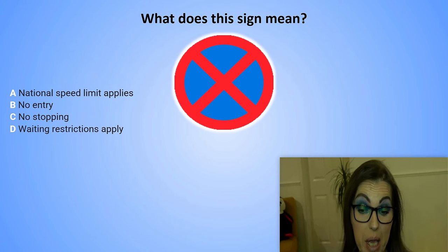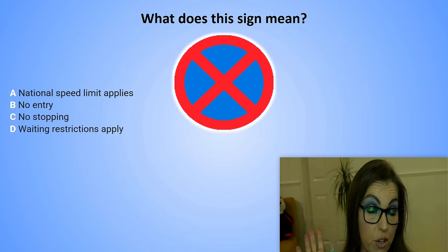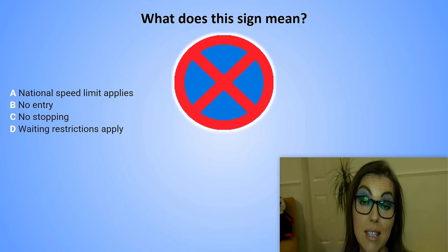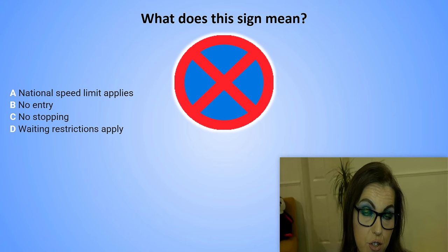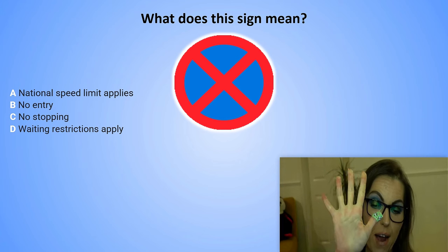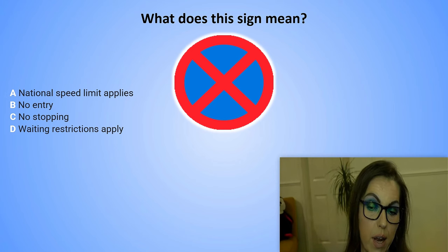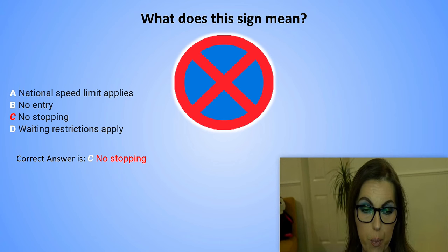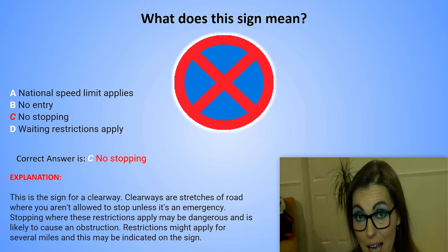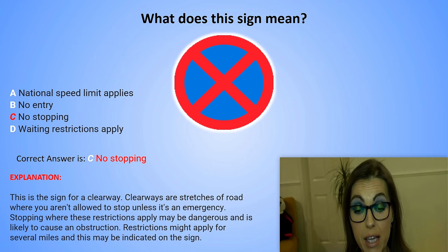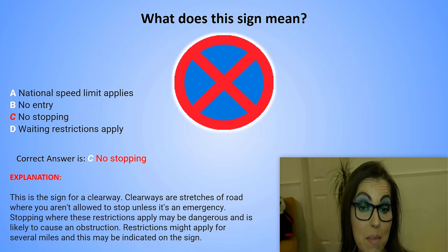What does this sign mean? A. National speed limit applies. B. No entry. C. No stopping. Or D. Waiting restrictions apply. The correct answer is C. No stopping. Explanation: This is the sign for a clearway. Clearways are stretches of road where you aren't allowed to stop unless it's an emergency. Stopping where these restrictions apply may be dangerous and is likely to cause an obstruction. Restrictions might apply for several miles and this may be indicated on the sign.